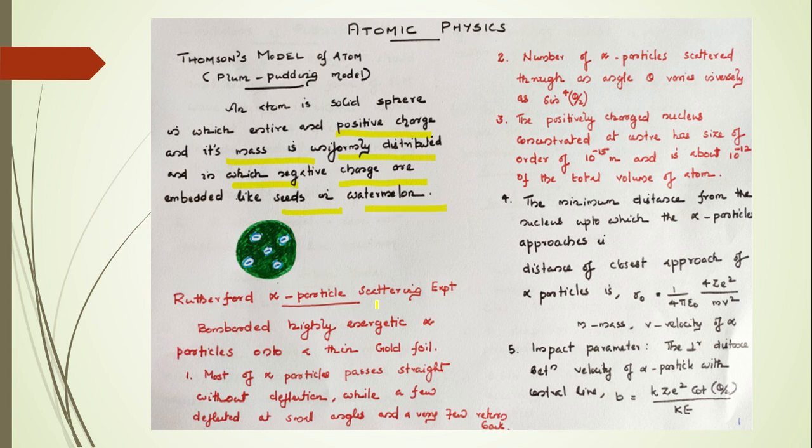See, the Rutherford Alpha Particle Scattering Experiment and the important conclusions. Bombarded with highly energetic alpha particles onto a thin gold foil. The important inferences are very important for the examination point of view. Most of the alpha particles pass straight without deflection, while a few deflected at small angles and a very few return back. The number of alpha particles scattered through an angle theta varies inversely as the fourth power of sine of angle by 2.